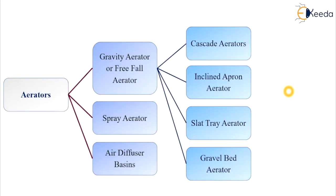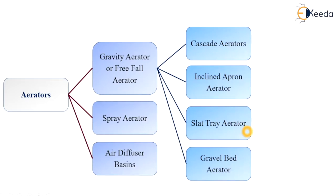The types of aerator systems: aerators are classified into three types. First is gravity aerator or free fall aerator. Second is spray aerator. Third is air diffuser basins. Under gravity aerators, there are four subtypes: cascade aerators, inclined apron aerators, slat tray aerators, and gravel bed aerators. Let's see them one by one.